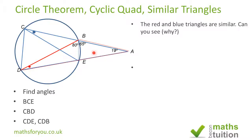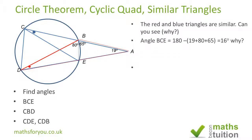Now, knowing that angles in a triangle add up to 180, we do 180 minus 19 minus 65 minus 80, and that gives us 16 degrees. So the blue dot angle and the red dot angle are each 16 degrees — and that is angle BCE.